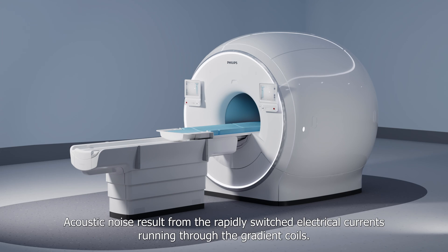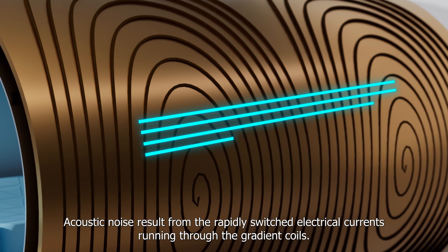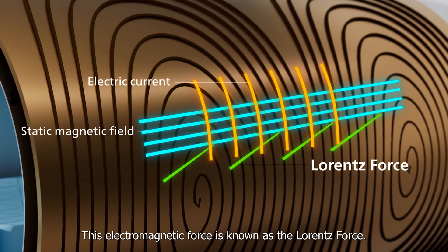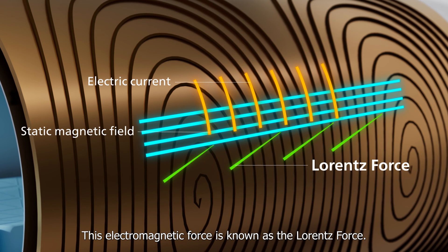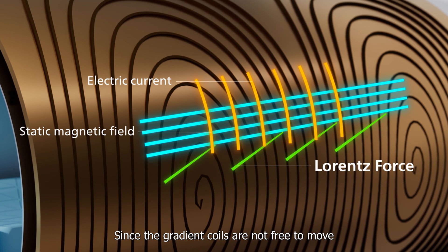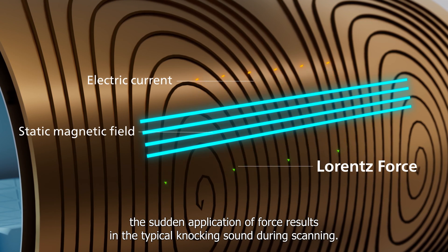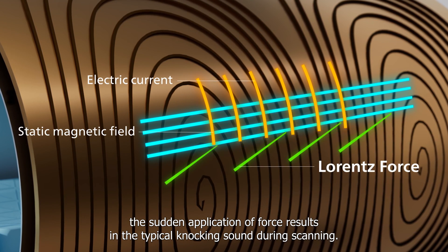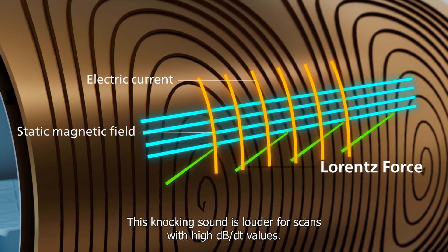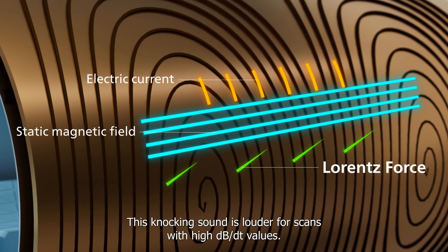Acoustic noise results from the rapidly switched electrical currents running through the gradient coils. This electromagnetic force is known as the Lorentz force. Since the gradient coils are not free to move, the sudden application of force results in the typical knocking sound during scanning. This knocking sound is louder for scans with high dB/dt values.